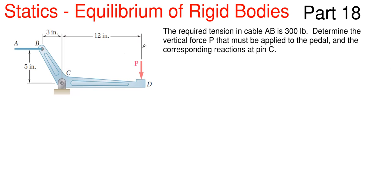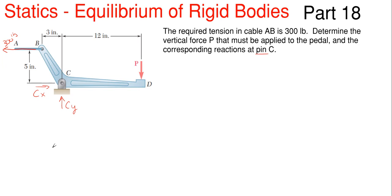Let's set up a free body diagram. We're going to apply our tension force of 300 pounds in cable AB. We are told that we have a pin at C, so I'm going to throw in my assumptions for my reactions. I'm going to assume Cy is upward and Cx is to the right. When throwing on assumptions for your unknown reactions, don't worry if you assume them in the wrong direction, because you'll just get a minus sign in the end.